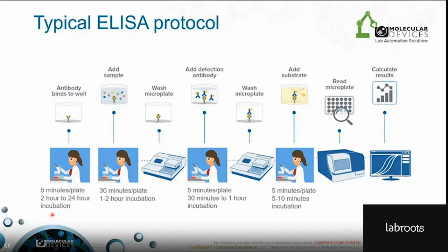Here is a general schematic of a typical ELISA protocol utilizing a plate washer. The researcher will add an antibody to a coated plate and allow it to incubate for 2 to 24 hours. Following this, standards and samples are added and another incubation step occurs, typically 1 to 2 hours. After incubation, the plate can be washed by hand or using a plate washer — in this example, we are depicting the AquaMax. Following plate washing, the detection antibody is added and another washing step occurs. Finally, the substrate and stop solution are added, and the plate is ready to be read by a microplate reader.